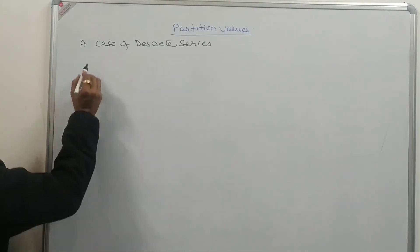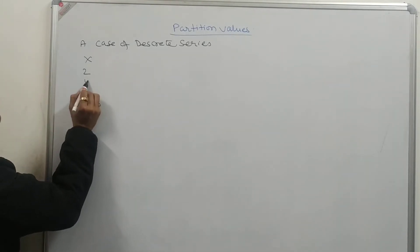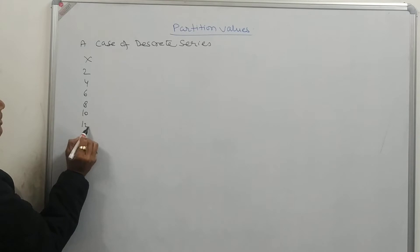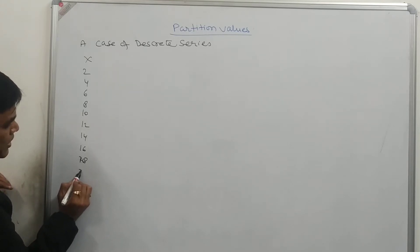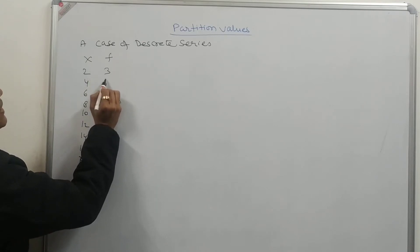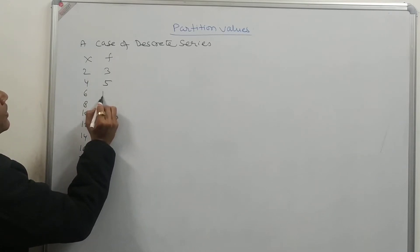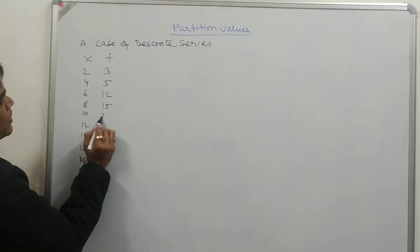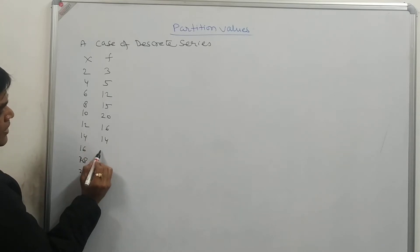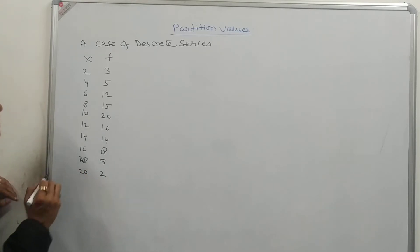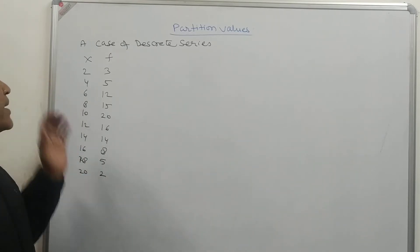I am having the example — a case of discrete series. Suppose our discrete series x is: 2, 4, 6, 8, 10, 12, 14, 16, 18, and 20. The frequency is given as: 3, 5, 12, 15, 20, 16, 14, 8, 5, and 2.